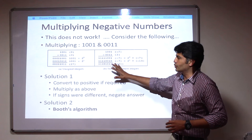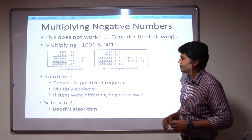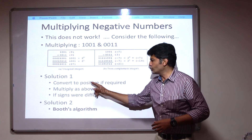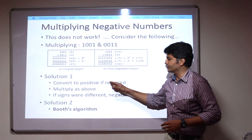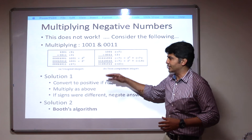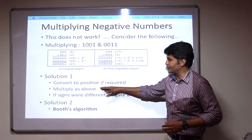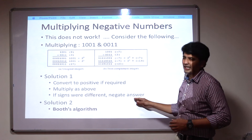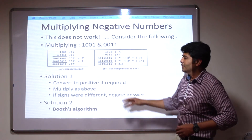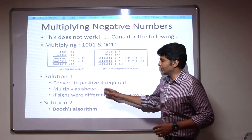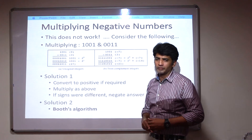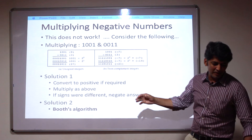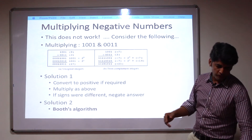To solve this complexity, you have two solutions. One is to convert to positive — if required, you can convert it, then multiply as above, just like positive numbers. But if the signs were different, you need to negate the answer. This is one solution, but it is a little bit complex to implement. So you can go for solution number 2: Booth's algorithm, which is a little bit easier compared to the previous solution.